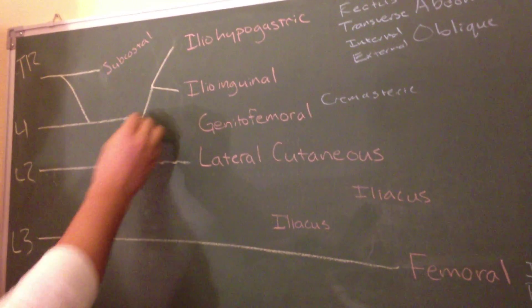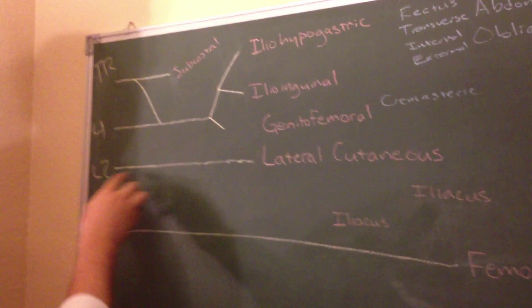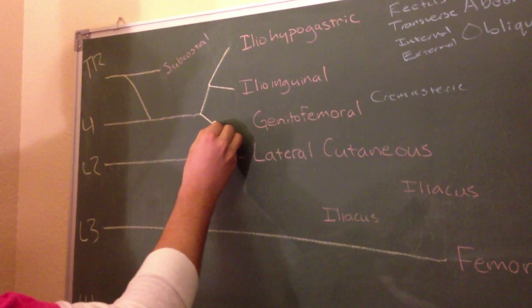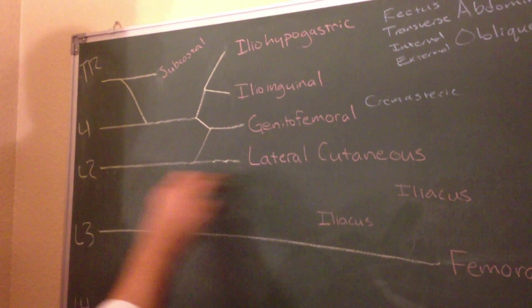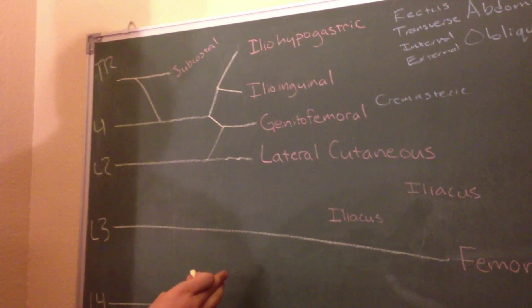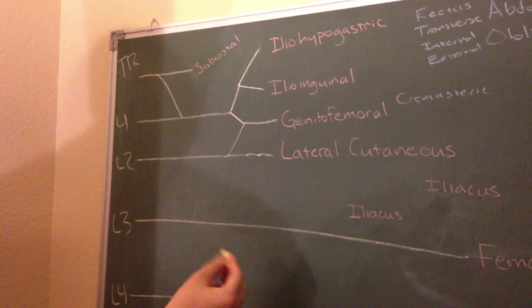Next, draw an arrow down from L1 halfway, and another line from L2 connecting to that. And that is going to create the genitofemoral branch. L2 is the lateral cutaneous branch, and L2 is going to connect to L3 with an anterior and a posterior branch, like in the brachial plexus.